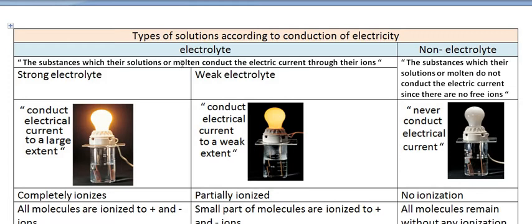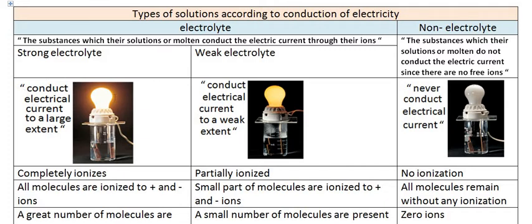The substance whose solutions or molten form conduct electric current through their ions is called an electrolyte. Molten means a solid substance which is converted into a liquid under the effect of heat. On the other hand, the substance whose solutions or molten form do not conduct electric current because there are no free ions is called a non-electrolyte.